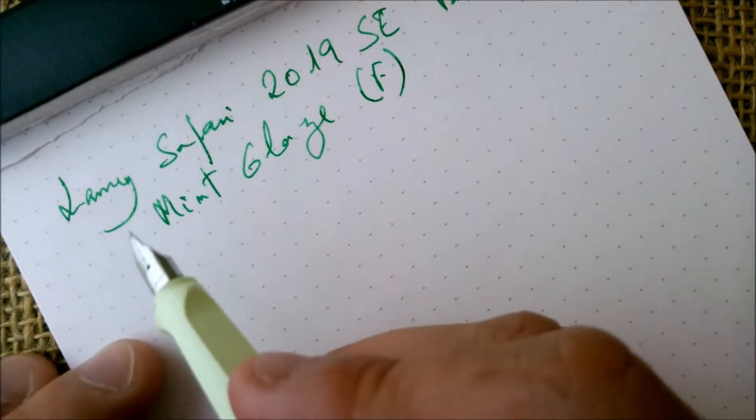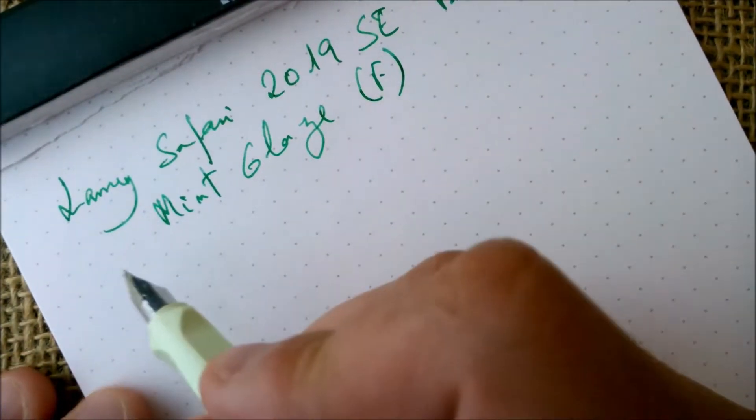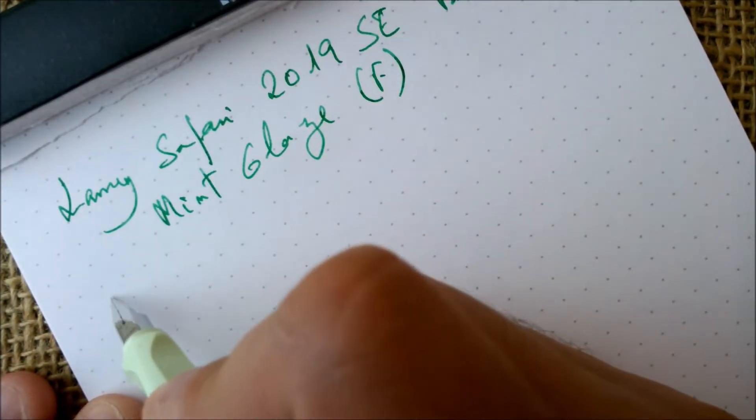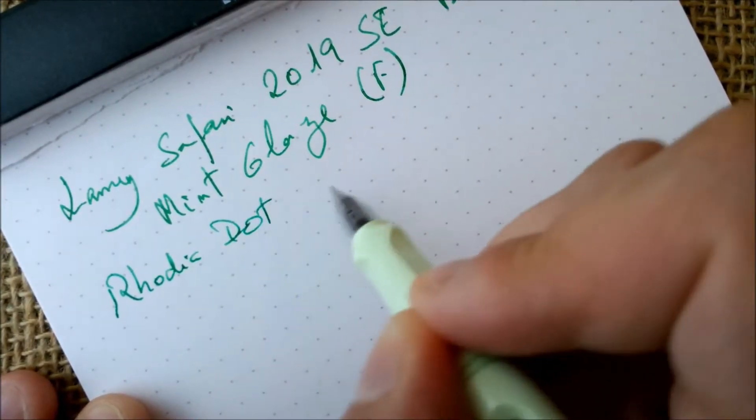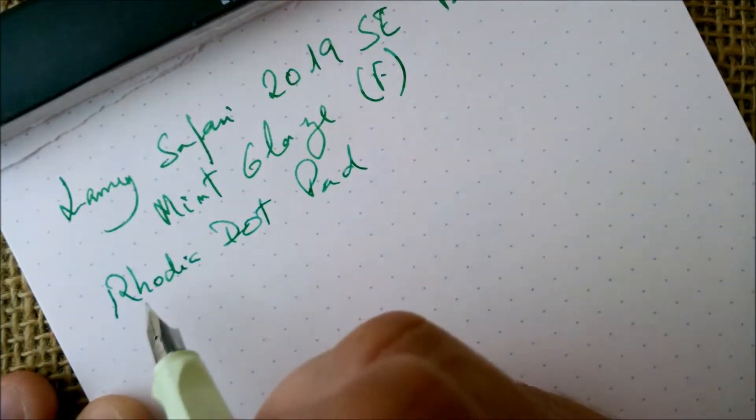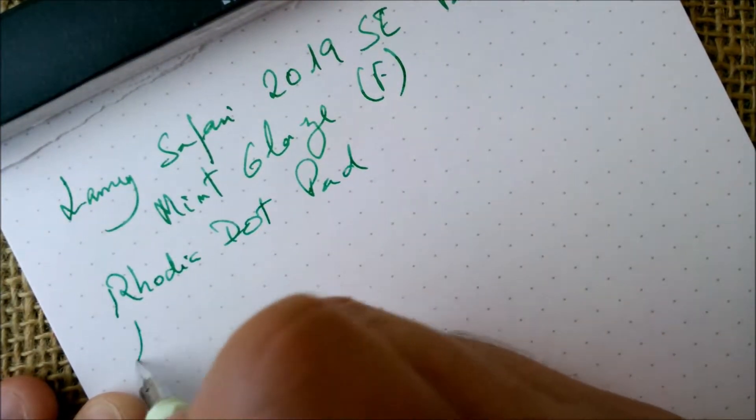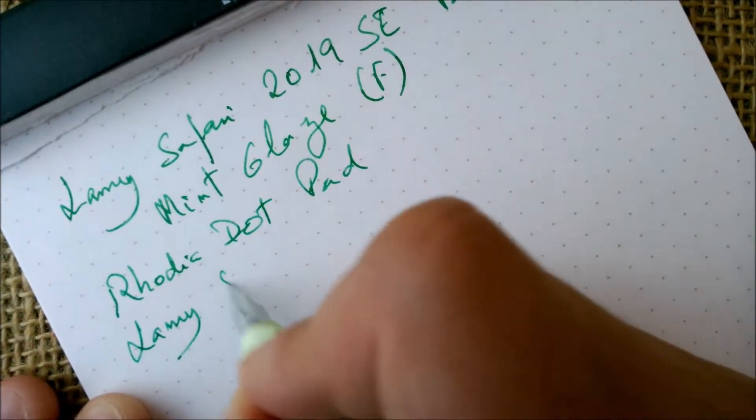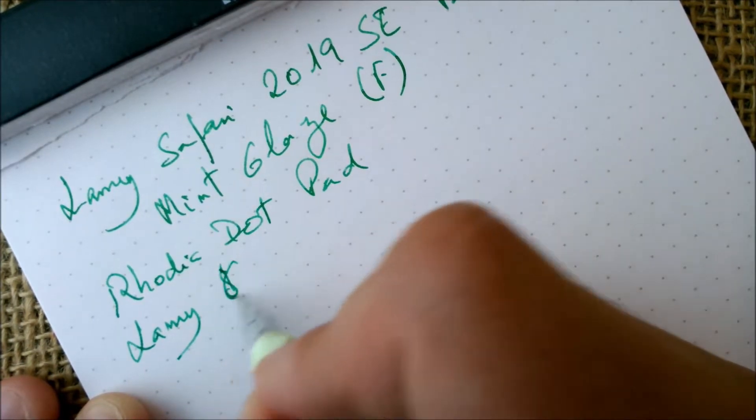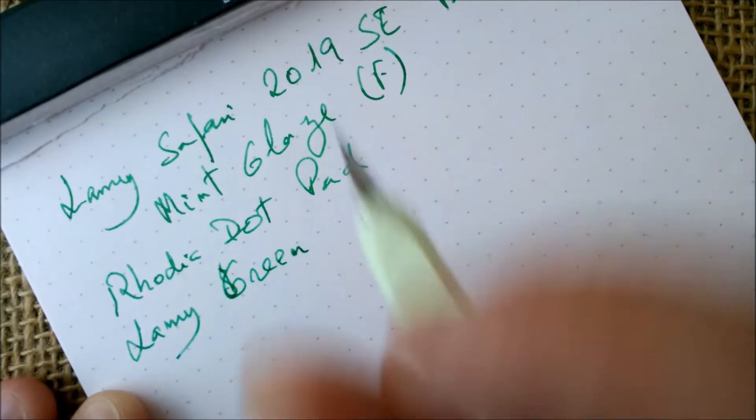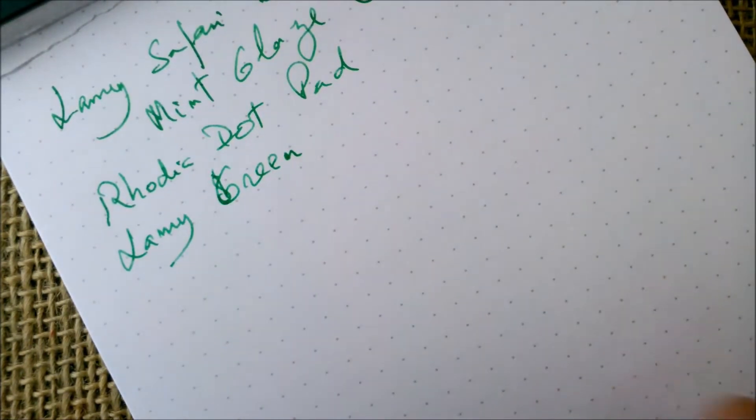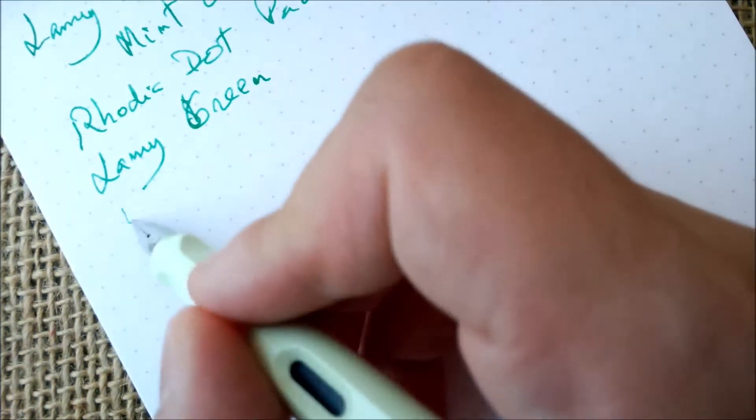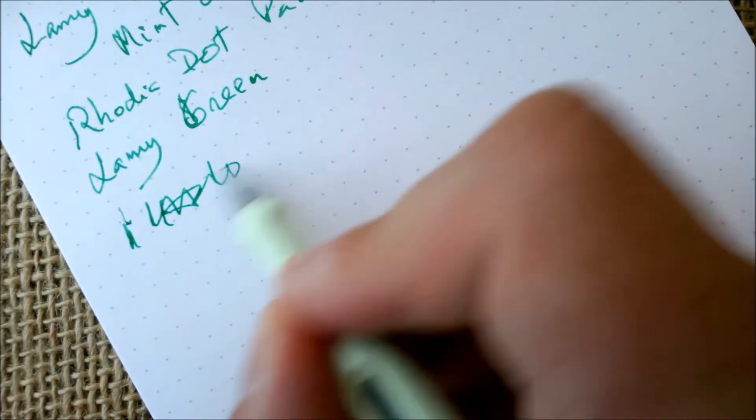This pen has the color that is called mint glaze and the nib on it is a fine steel nib. The paper is the usual Rhodia dot pad and the ink is the Lamy green from the older collection of Lamy inks. As you saw, the nib writes really well.